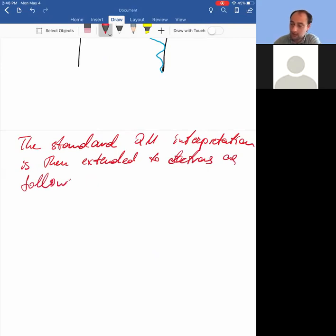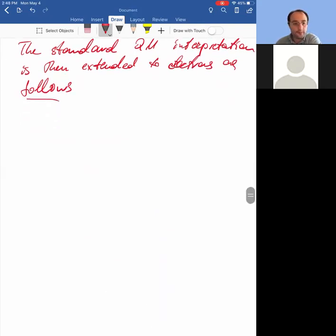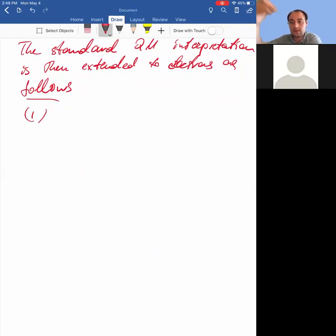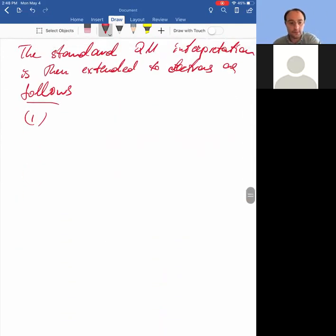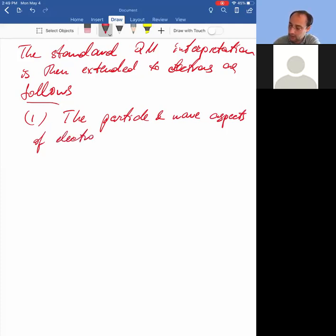Okay, so at this point you can take that as a postulate. So first of all, and I'm going to try to use the same words, so if you compare this with this you will see that they're almost the same words. Okay, so the particle and wave aspects of electrons are inseparable. Electrons behave...